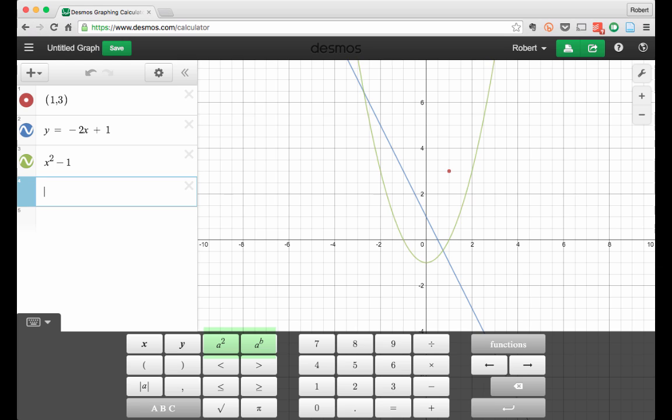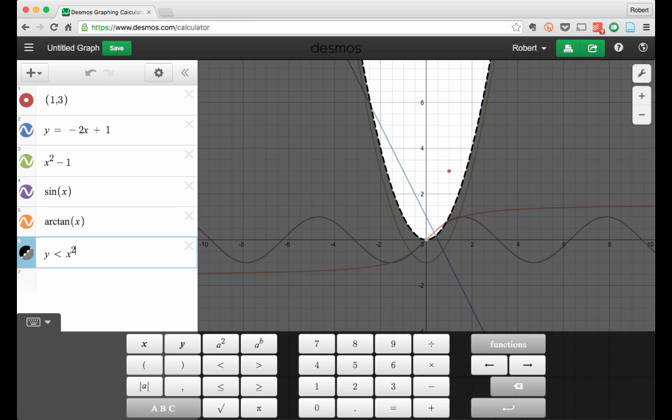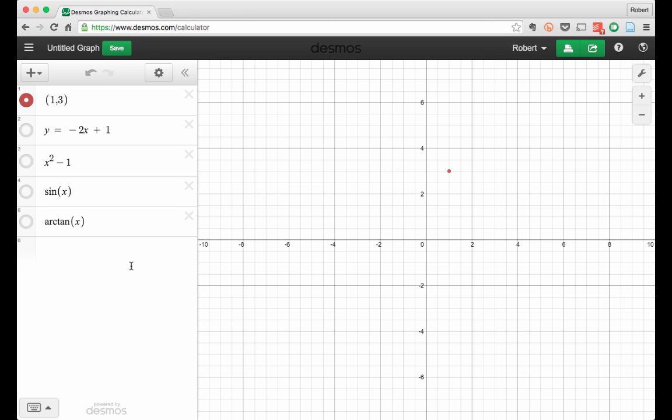I can graph trigonometric functions, inverse trigonometric functions, even inequalities. The screen is getting a little messy, so I'm going to delete the inequality graph by clicking the X button. And I'm going to hide the last four graphs without deleting them by clicking on the colored circles on the left. And I can always turn them back on later if I want to see them again.